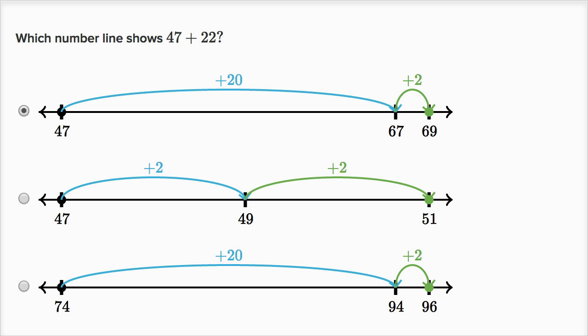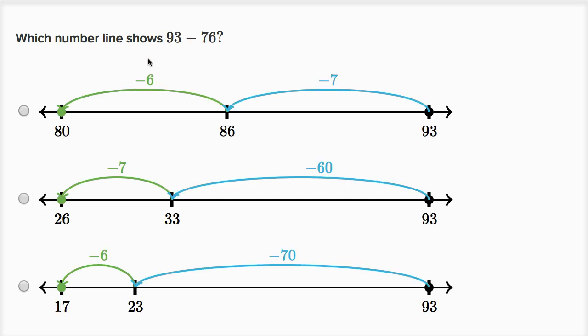Let's do a few more examples. Which number line shows 93 minus 76? So let's see, in all of these choices, we're starting at 93. Here, in this first choice, we subtract seven and then six.